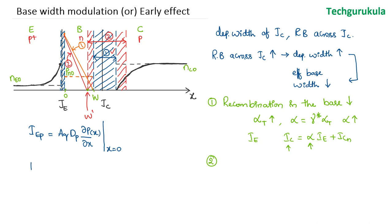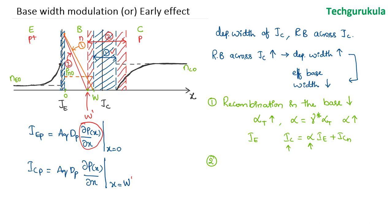We know that IEP is equal to A·Q·DP · (∂P/∂x) at x = 0, where P represents the hole concentration change with respect to distance. Similarly, ICP is given by A·Q·DP · (∂P/∂x) at x = W. Because of base width modulation, W has changed to W prime. Looking at the curves in the base — case 1 versus case 2 — case 2 has the highest slope; hence the partial differentiation is higher in the second case. The slope increases as we increase the reverse bias across the collector junction, so the concentration gradient in the base increases, causing IEP to increase.